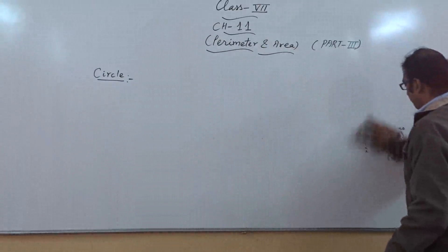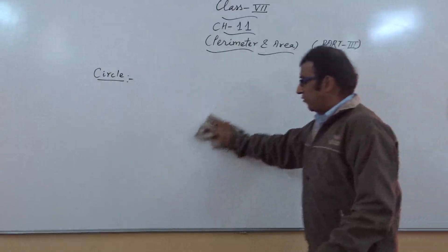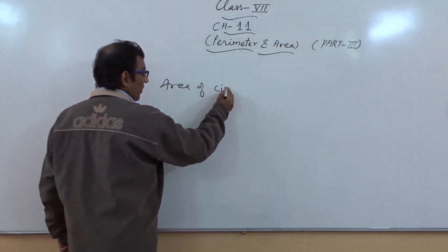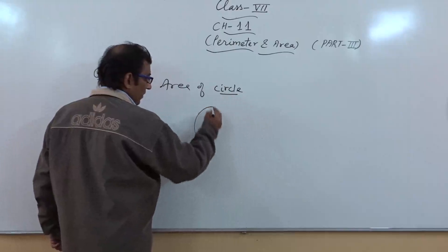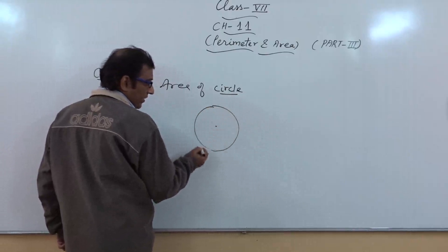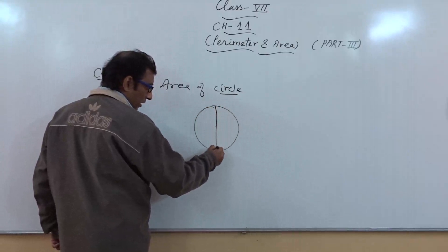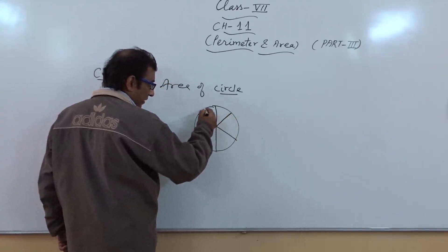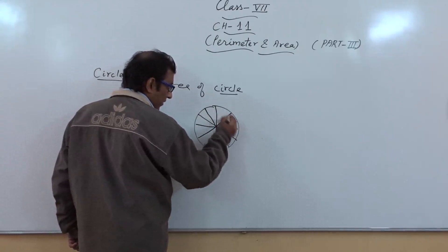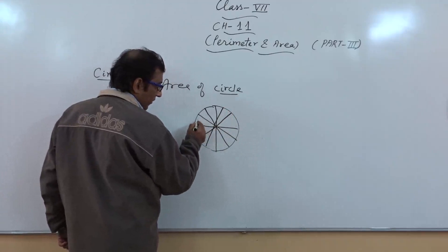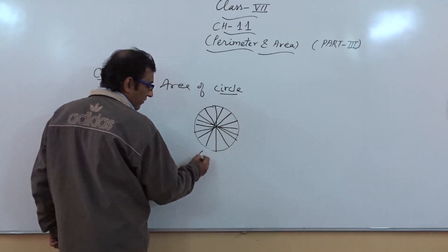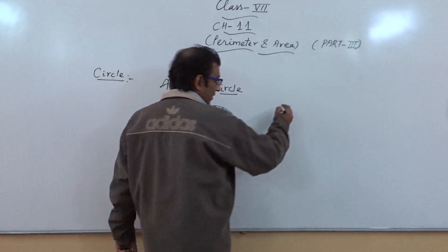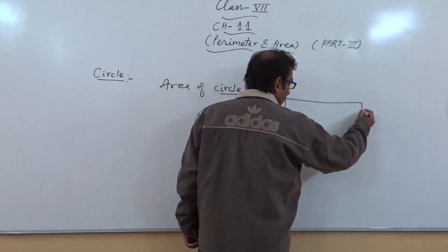Now we will come to the next part: how can we calculate the area of a circle? This is the diagram of a circle, and this is the center. If we divide a circle into different types of sectors — for example 64 sectors — it looks like a parallelogram when we arrange them in such a way.